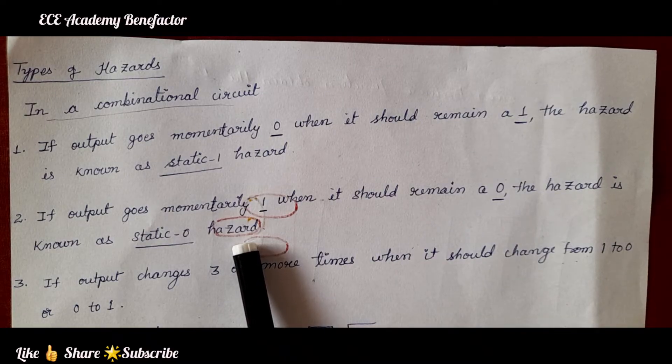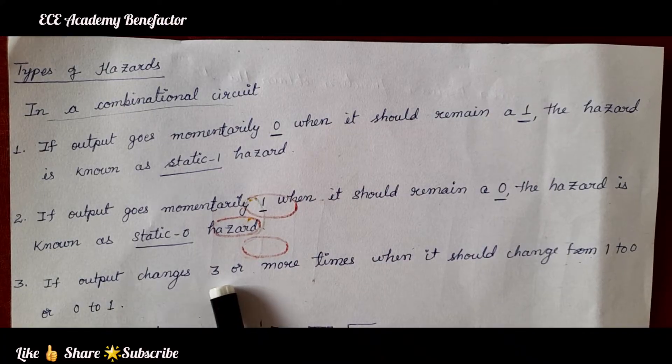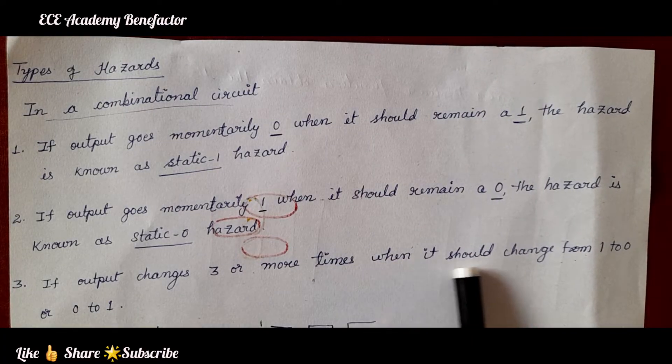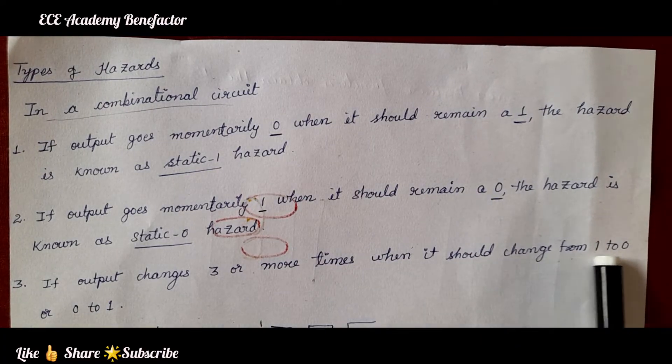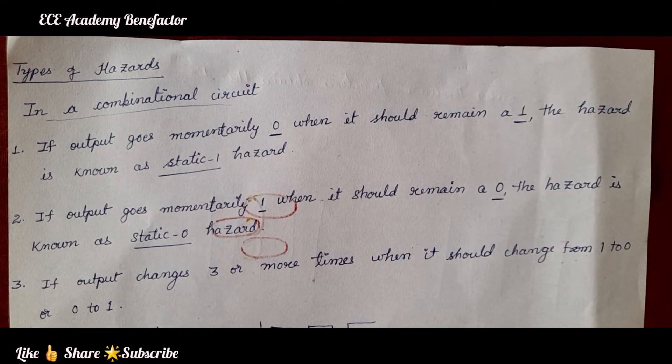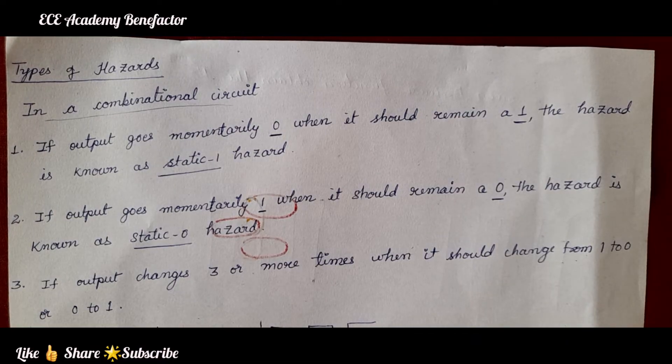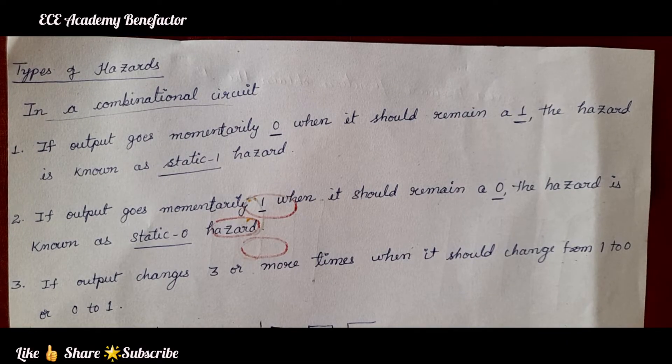Dynamic hazard. If the output changes 3 or more times, when it should change from 1 to 0 or 0 to 1. The output when it is changing from 0 to 1 or 1 to 0, only 1 change should appear. But if the output is changing 3 or more times, then it is known as dynamic hazard. So, these hazards are occurring in combinational circuits.